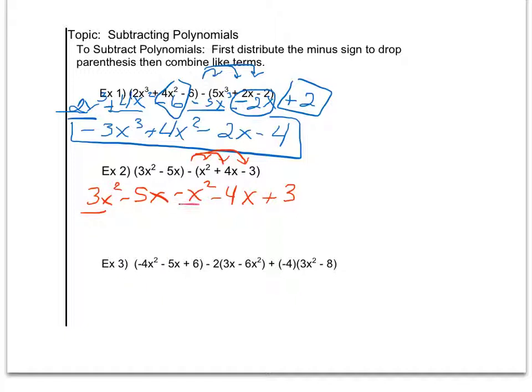Combining like terms, 3x squared and minus x squared is 2x squared. Negative 5x and negative 4x is negative 9x. And then dropping the plus 3 down. I'm in standard form since my exponents are descending. And there's nothing else I can do, so I'm going to go ahead and stop there.